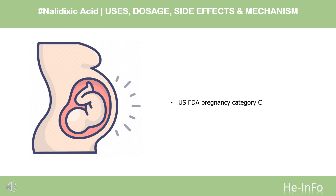Safety advice: Nalidixic acid has been assigned to pregnancy category C by the FDA. Animal studies have revealed teratogenic and embryocidal effects and prolonged pregnancy duration. There are no controlled data in human pregnancy.